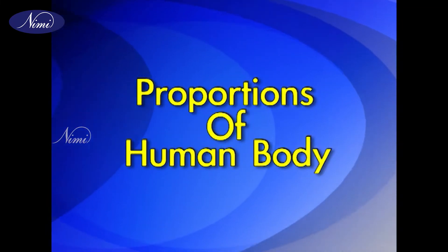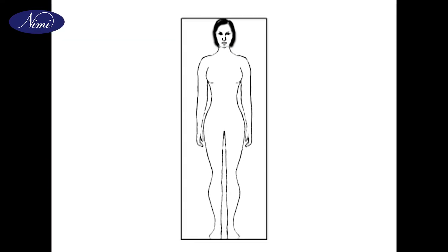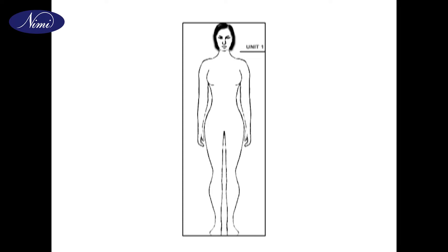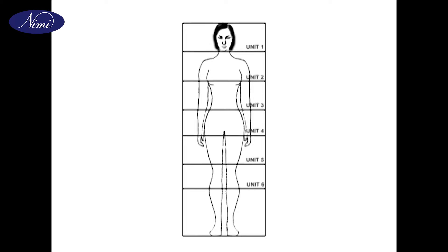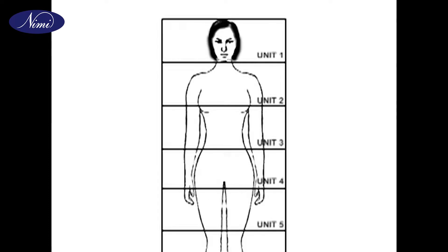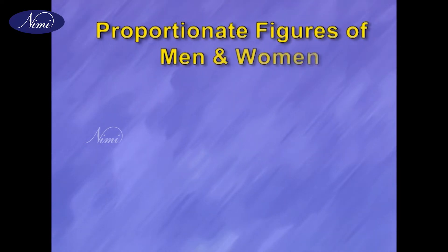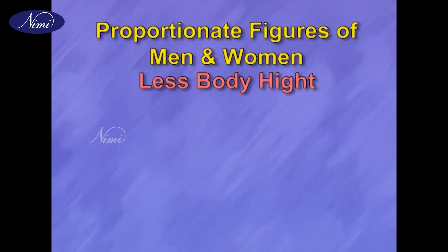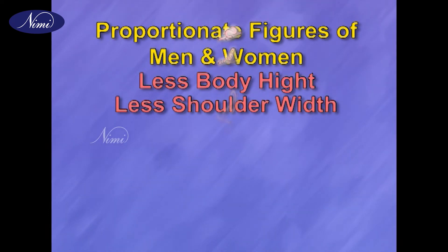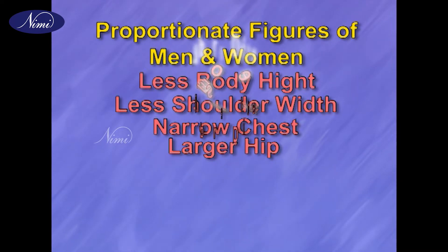Now we begin with measurements. The proportions of the human body: the body is divided into eight equal parts — head to chin, chin to nipple, nipple to navel, navel to pubic organ, pubic organ to mid-thigh, mid-thigh to below the knee, below the knee to above the ankle, above the ankle to toe. Some proportions generally differ in men's and women's bodies. The main different features of the women's body are: less body height, less shoulder width, narrower chest, larger hip, and more delicate limbs.